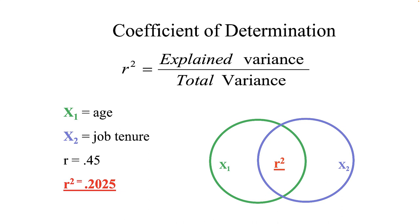Remember that one is not the cause and the other is not the effect — they're just correlated. If r sub XY equals .5, then r squared is .25, meaning they overlap by 25%. Here's another example: if two variables correlate at .9, then r squared is .81 — those two variables share 81% of their variance and the two circles sit almost on top of each other, but not exactly.